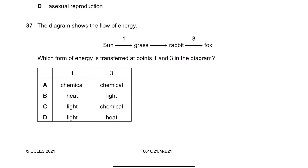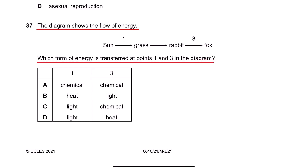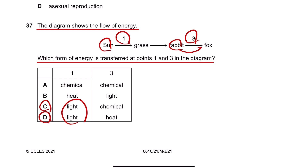Number 37. The diagram shows the flow of energy. Which form of energy is transferred at points 1 and 3? The sun provides light energy, so the answer is either C or D. The rabbit is eaten by a fox, and the rabbit's flesh acts as chemical energy transferred to the fox. So the answer is C.